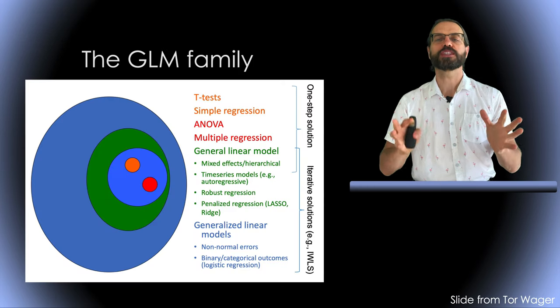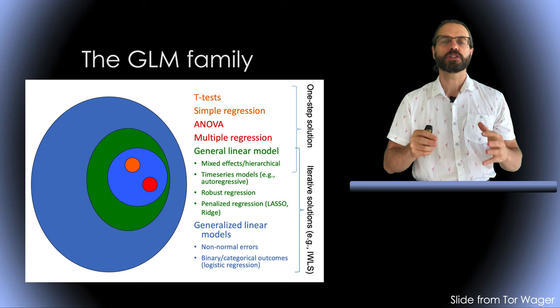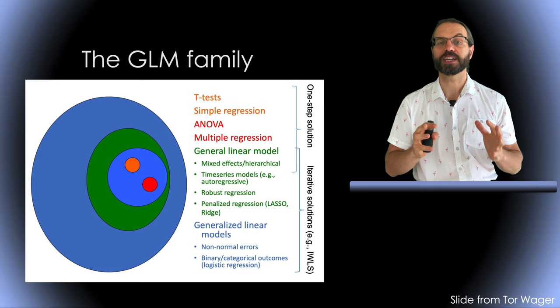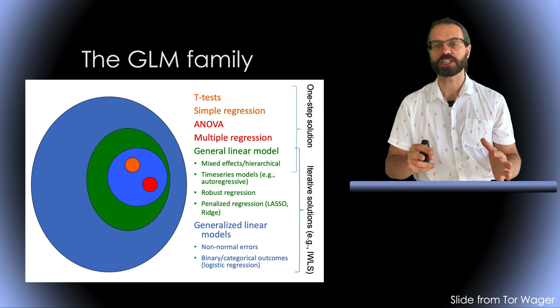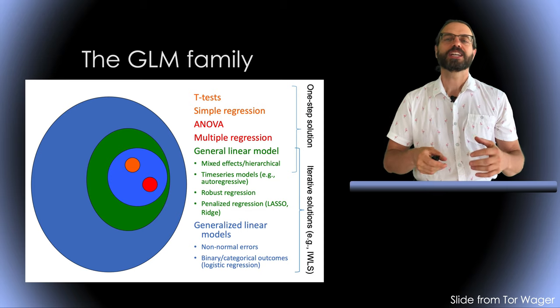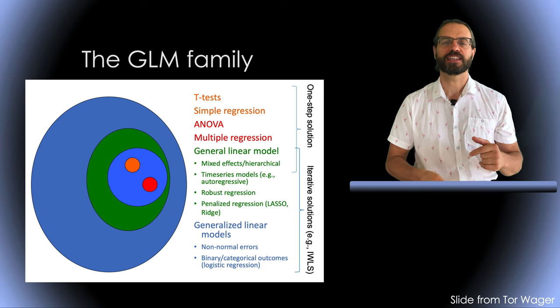First, I'm going to explain to you why we use the general linear model. The general linear model is a method that encompasses most statistics you might already know such as t-test, simple regression, multiple regression, ANOVA, ANCOVA, etc. But it also allows designing more complex models as I will explain here.